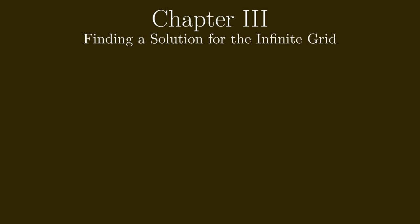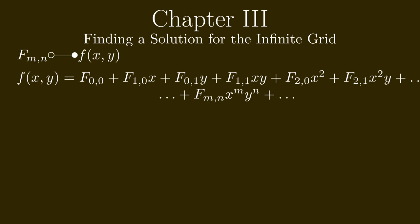Welcome to chapter 3. In this chapter we will put everything that we've learned together and try to find a solution for the infinite grid of 1 ohm resistors. We transform a series of values into a generating function, and we have built a 2-dimensional generating function so that we can transfer the discrete values on a grid into a generating function. The point on grid position m and n corresponds with the coefficient of x to the power of m and y to the power of n in the generating function.